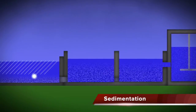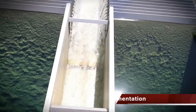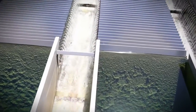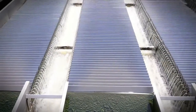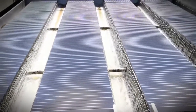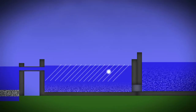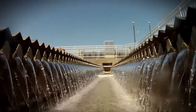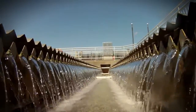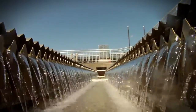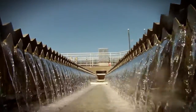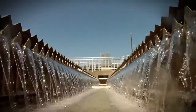After flocculation, the water together with the agglomerated particles flows through a huge sedimentation basin, where the liquid is split from the solid. The water flows very gently through the basin, and the settled particles at the bottom are collected by spinning scrapers into a hopper. A sufficient retention period is essential for the sedimentation process to complete. Then the clear water moves out of the basin to the filters.